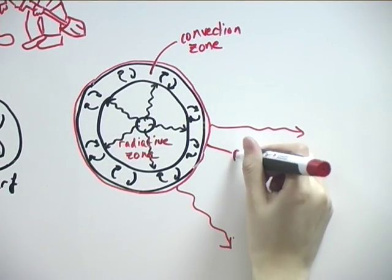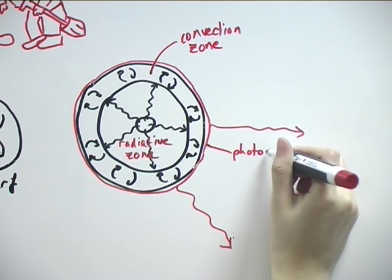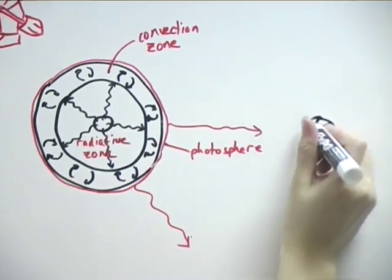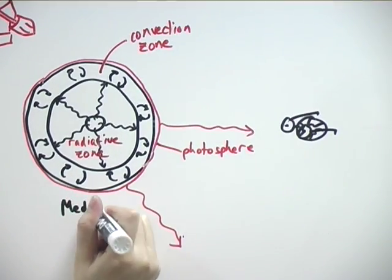When the energy reaches the surface, which is called the photosphere, it is radiated out into space, enabling us to see it from Earth. In this way, we can see a star shining.